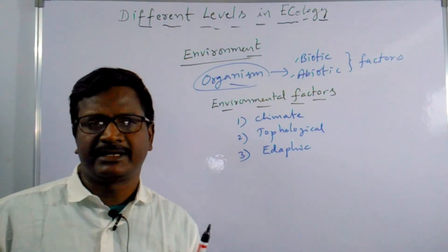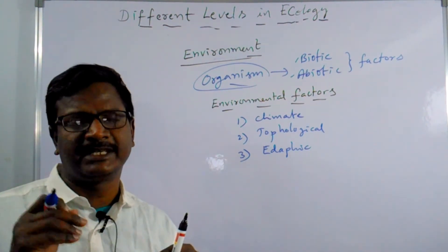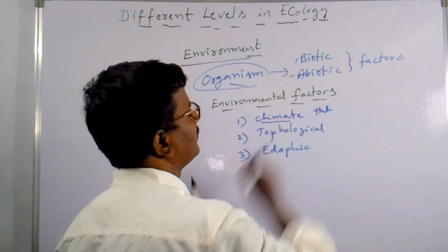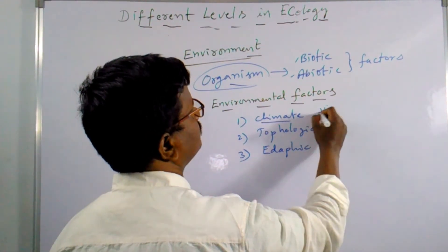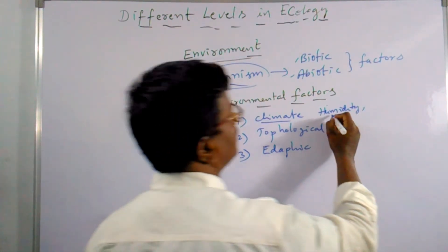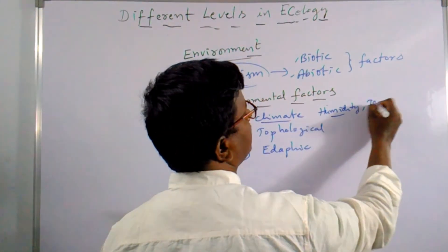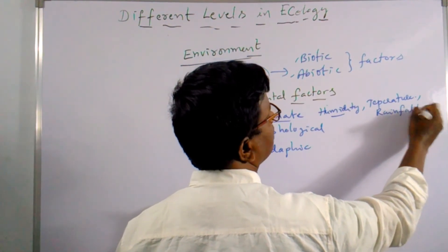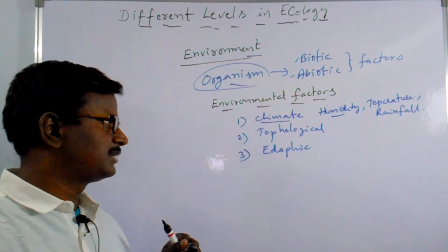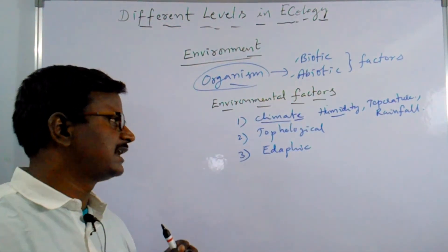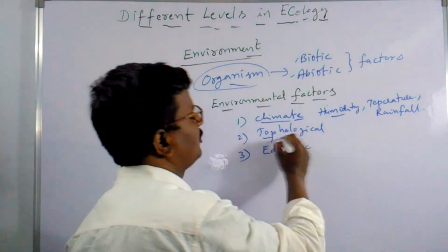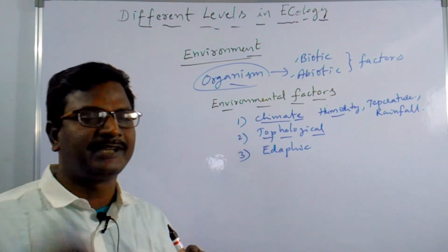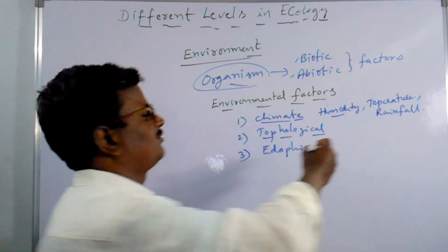Climatic factors include humidity, temperature, and rainfall — all the climatic conditions present in the air. Topological factors refer to the physical features of the earth such as altitudes, latitudes, and elevation. All these physical features come into the topological factors.